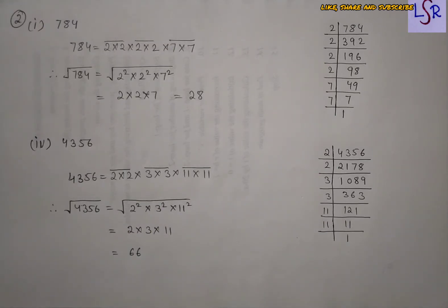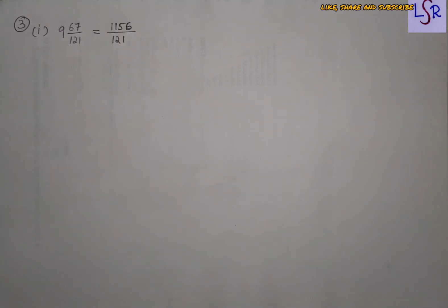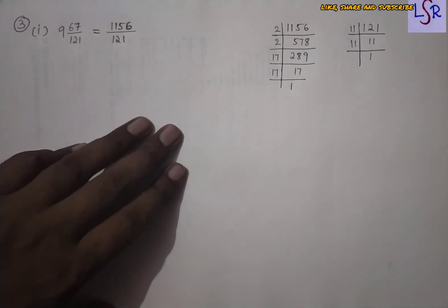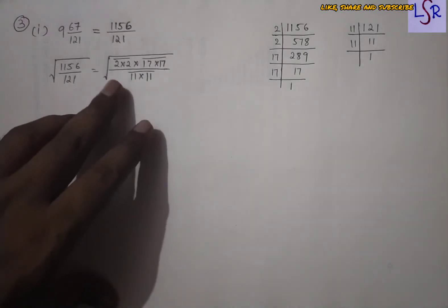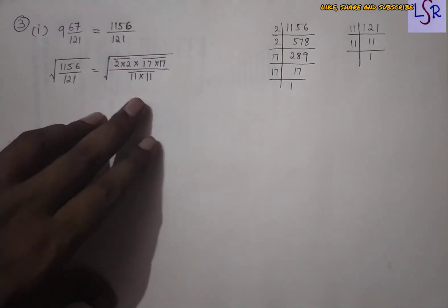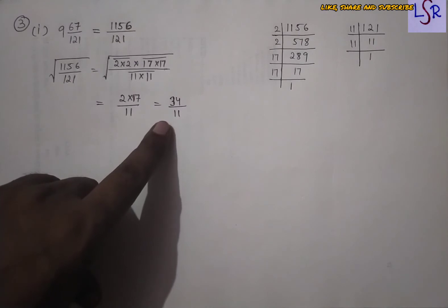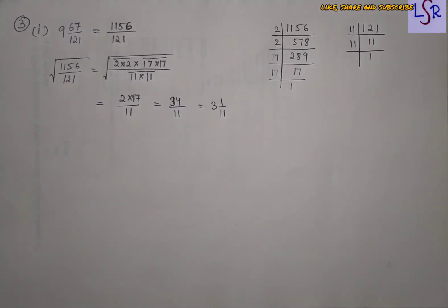In question number 3, we have a fraction and a decimal and we have to find their square roots. The first part is 9 whole 67/121. First we convert this to an improper fraction, then find the prime factors of both the numerator and denominator. We write all the factors in the form of multiples under a root, make pairs, and bring one member from each pair outside the root. We get 34/11, which in mixed form is 3 whole 1/11.